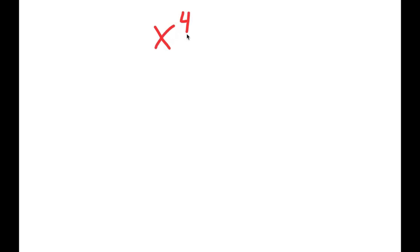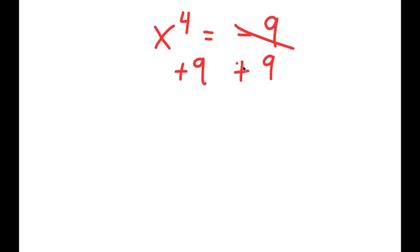For this video, I'm going to be solving the equation x to the power of 4 is equal to negative 9. So what I'm first going to do is add 9 on both sides, so then these two cancel out, and I get x to the power of 4 plus 9 is equal to 0.